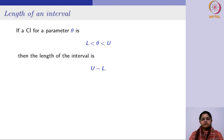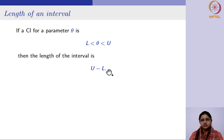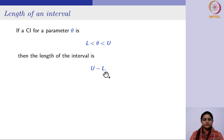Now, if you consider any interval for a parameter theta and it is a two-sided interval, then the length of the interval would be U minus L — the upper limit minus the lower one, upper bound minus the lower bound.